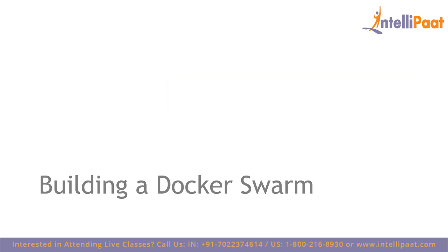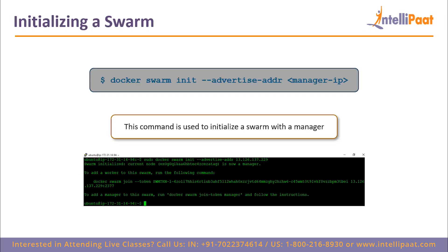Building a Docker Swarm. The first thing we do when building a Docker Swarm is we initialize a swarm. When we type in the command `docker swarm init`, this command will take that instance — wherever you are typing this command from — and make that instance into a manager node.